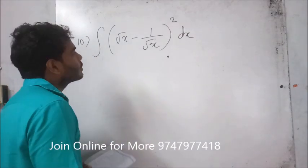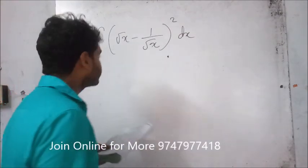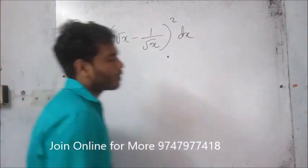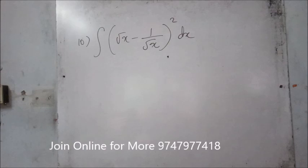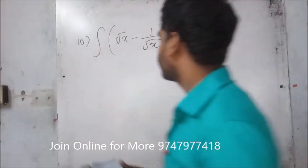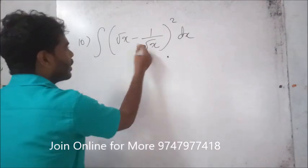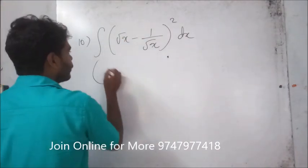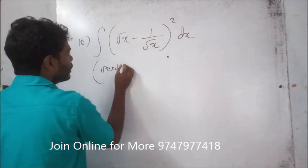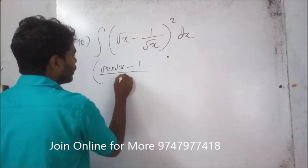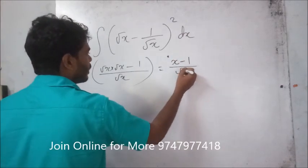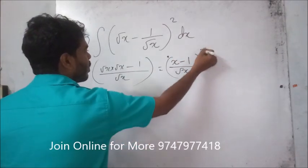Do you know — cross multiply it? Then it goes to x. By camelota, when we are root x into root x minus 1 divided by root x. We get x minus 1 divided by root x into whole square.